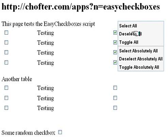The top three — Select, Deselect, and Toggle All — are context aware. Context aware means that they will only take action on the checkboxes that seem to be related to the checkbox that you have selected.